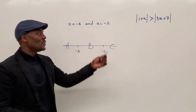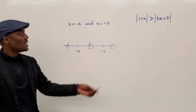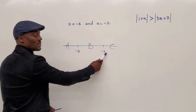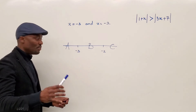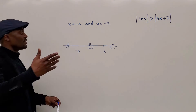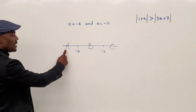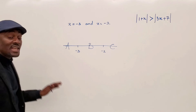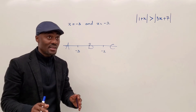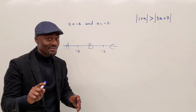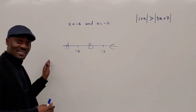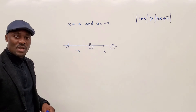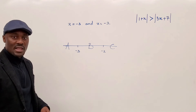All you have to do is quickly do some substitutions and see which region satisfies the inequality. It's very important that you get the critical points first. So at this point, we're going to plug in some numbers. For region A, we're going to look for a number to the left of negative 3 — that's any number smaller than negative 3. So we're going to take negative 4 and substitute it into the inequality.